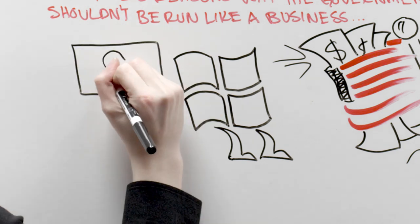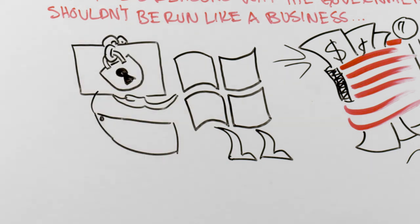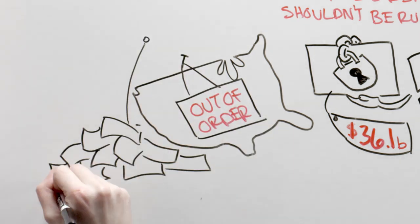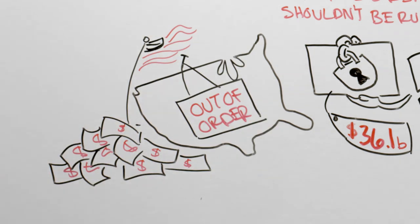Microsoft may be smart for keeping $36.1 billion in cash and liquid short-term investments, but the government would be letting people down if they sat on that much money and weren't using it to keep the country running.